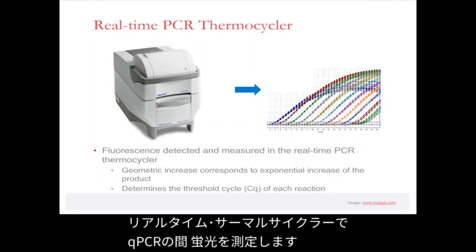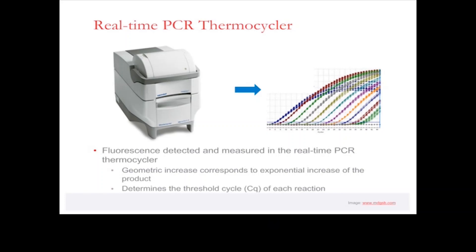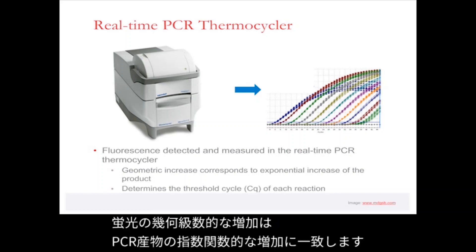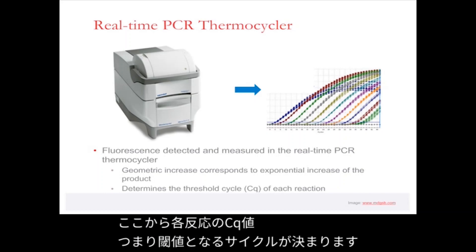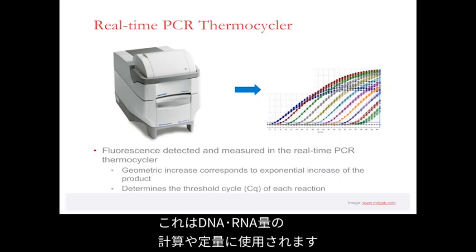The fluorescence in qPCR is detected and measured by the real-time PCR thermocycler. The geometric increase corresponds to the exponential increase of the product. This is plotted as you can see on the right-hand side of the diagram, from which the CQ — the fluorescence cycle — is determined for each reaction. This is then used to calculate or quantify the gene of interest.